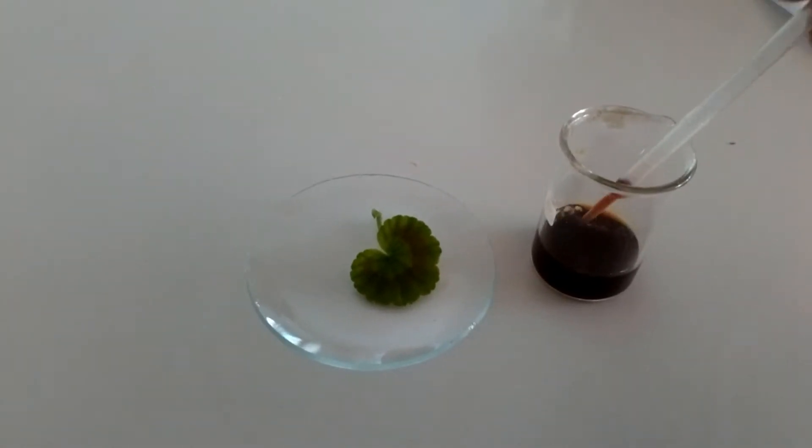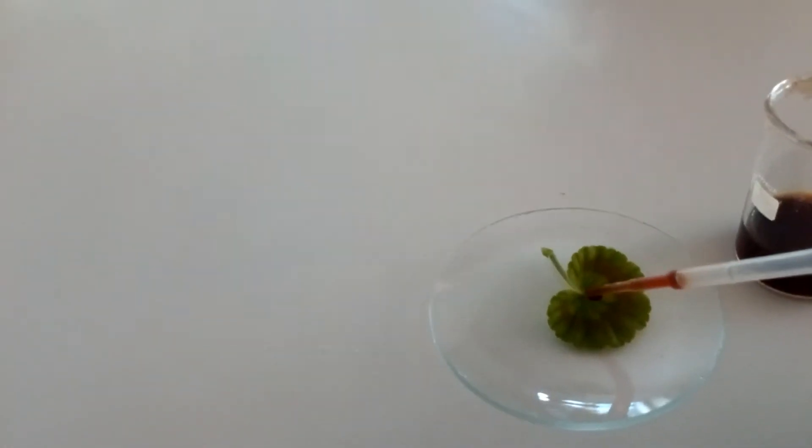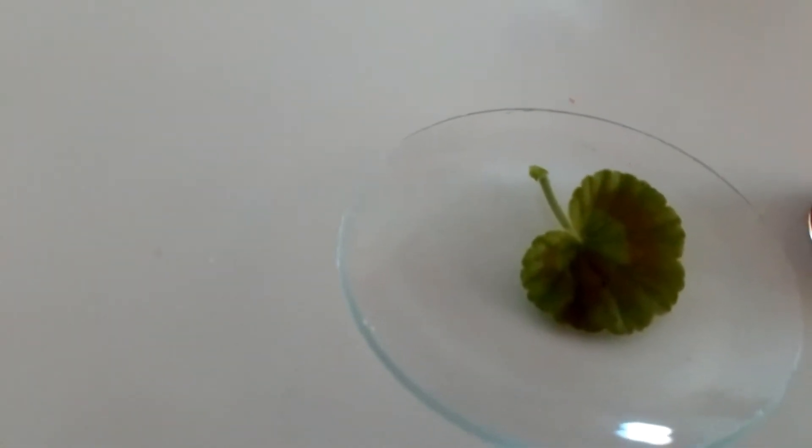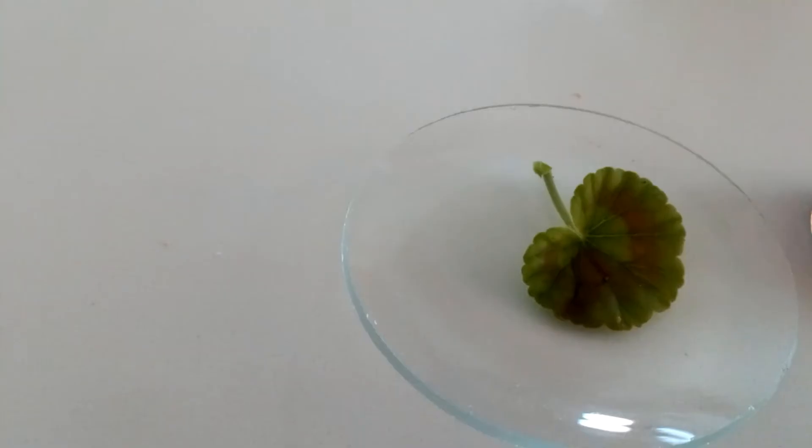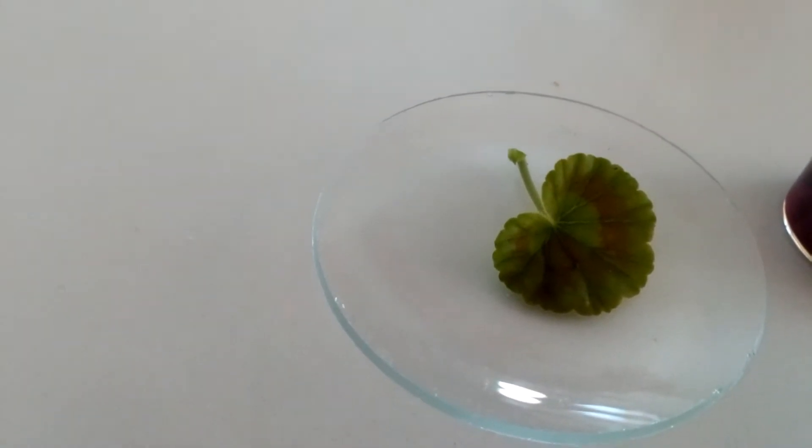And so if I take some iodine solution here and place it onto my leaf, the iodine solution can't penetrate the cells in order to get to the starch if it was present. And so it just rests on the surface. Also we wouldn't be able to see it because of the green color on the leaf.